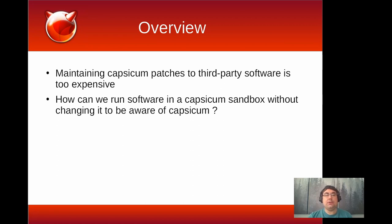The difficulty is twofold. The code bases for these projects are far too large — FreeBSD cannot possibly maintain a separate Capsicum-enabled fork. But those projects are not able to take FreeBSD-specific patches to add Capsicum support. So we're at an impasse. The problem we're trying to solve is: how can we run these third-party binaries in a Capsicum sandbox without modifying their source code?